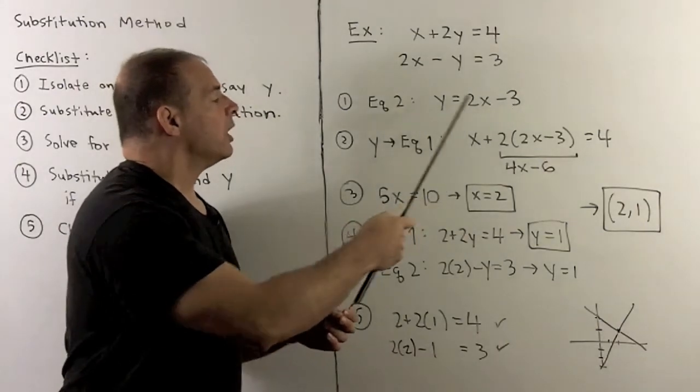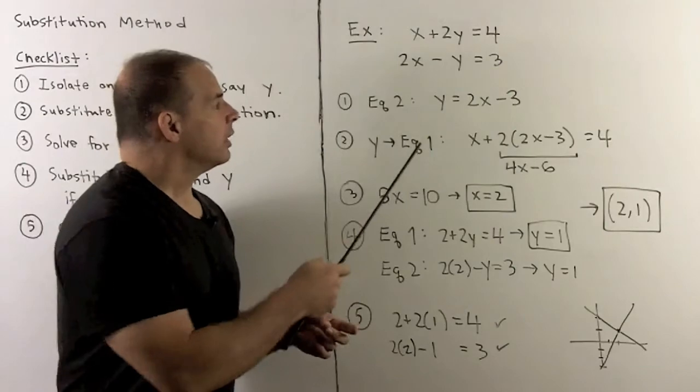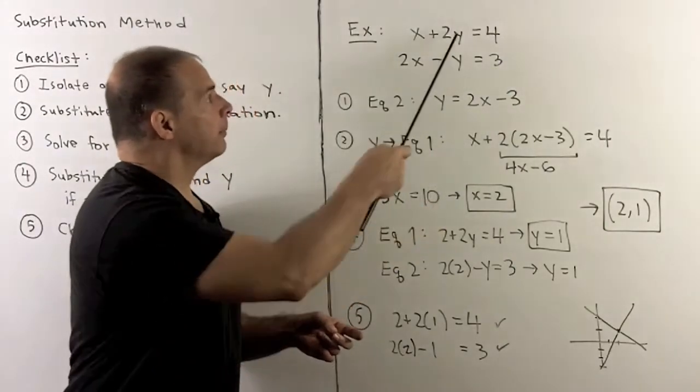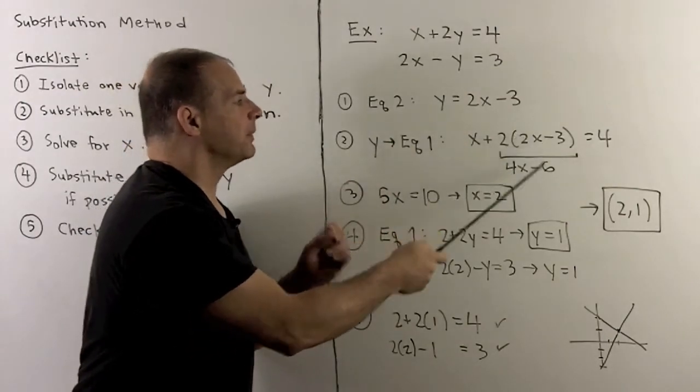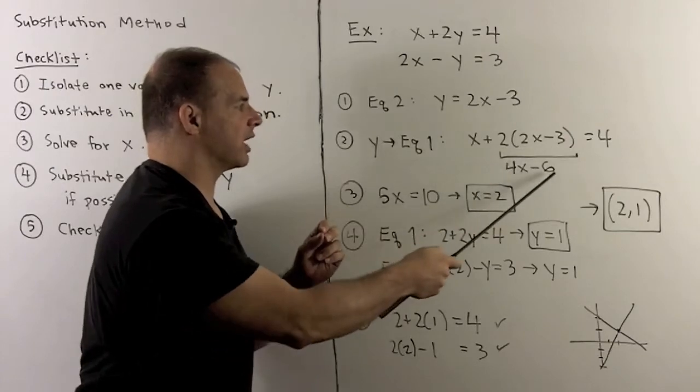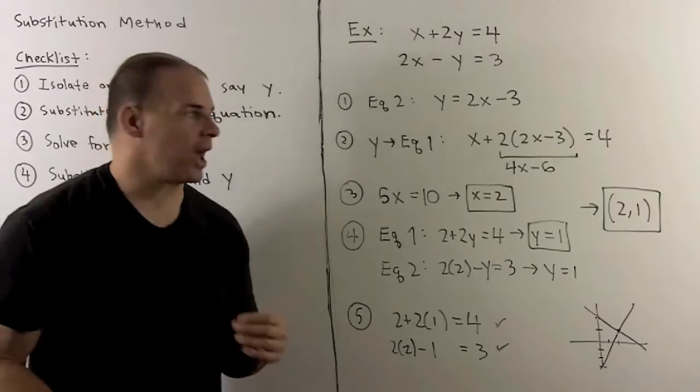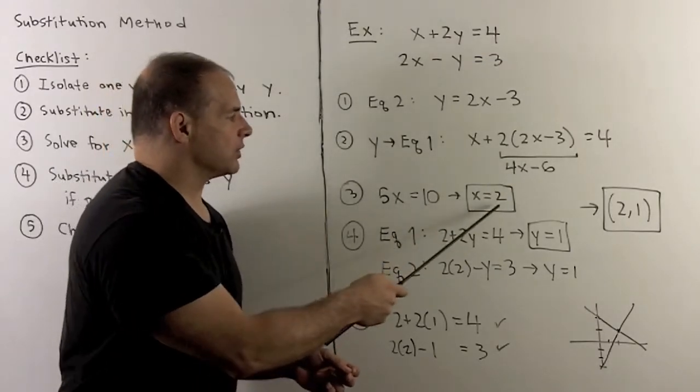We have y = 2x - 3. I move to step two, which is substitute into the other equation. We're going to put this expression for y into equation one. So, I have x + 2(2x - 3) = 4. I distribute, and this becomes 4x - 6. Everything is now in terms of x, so I can solve for x. That gives 5x = 10, or x = 2.